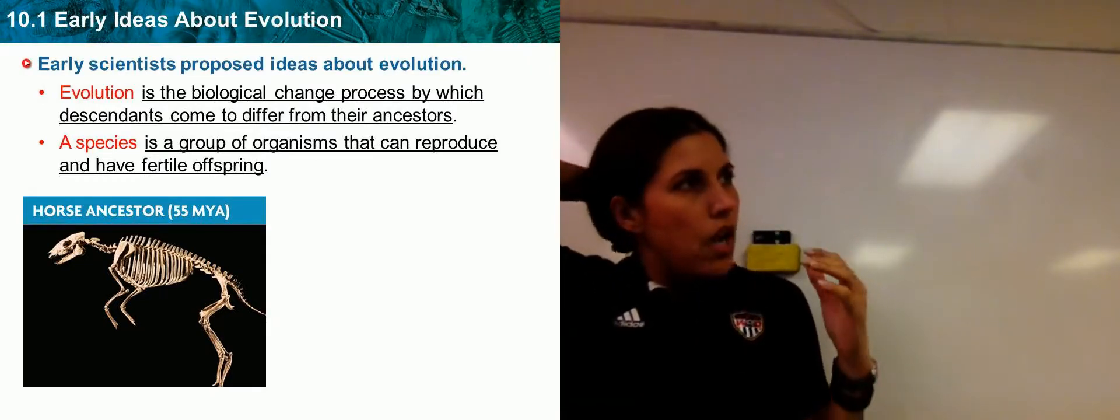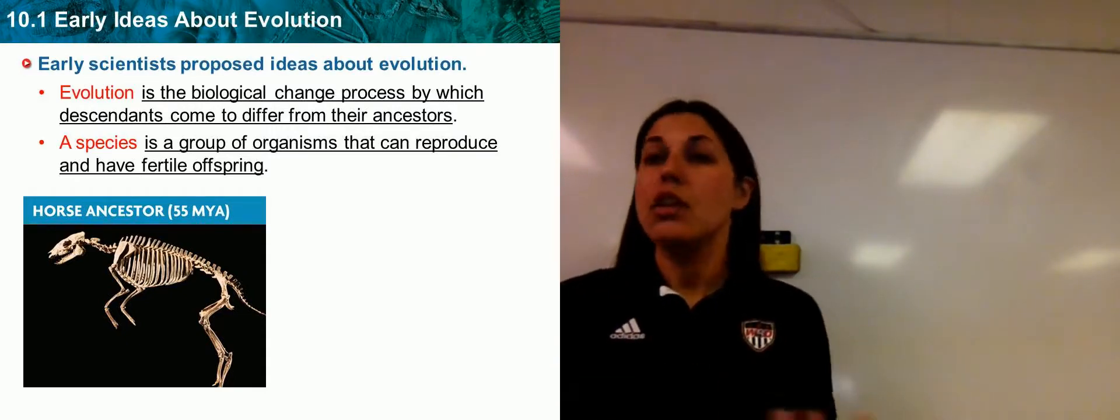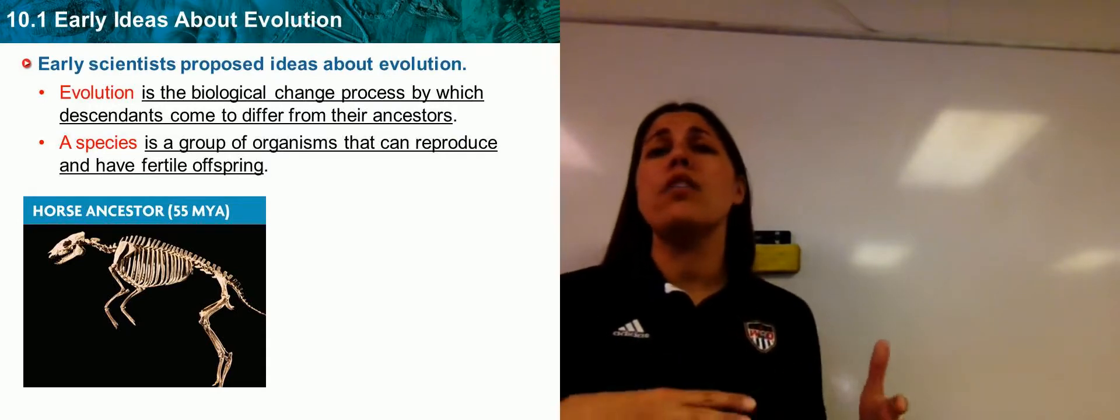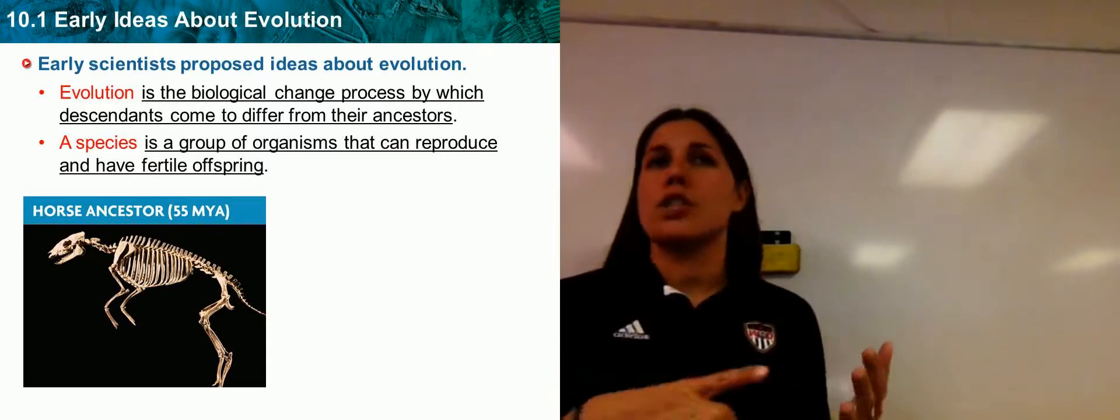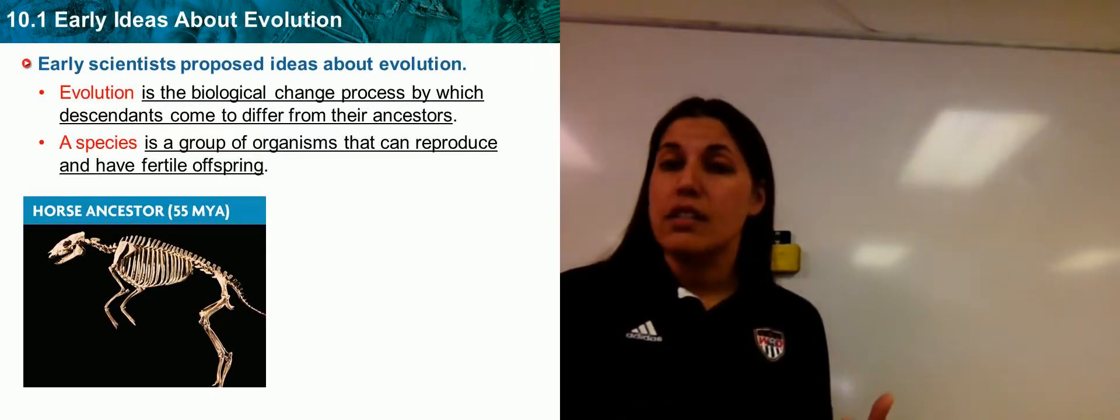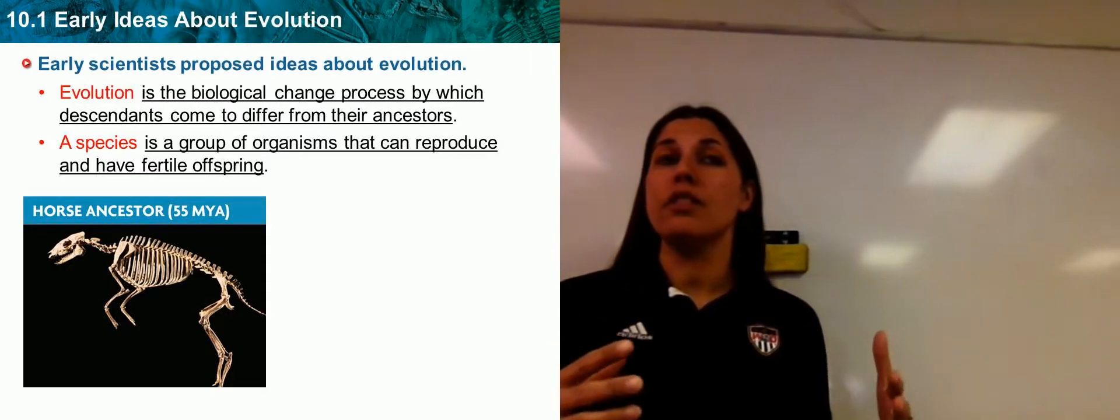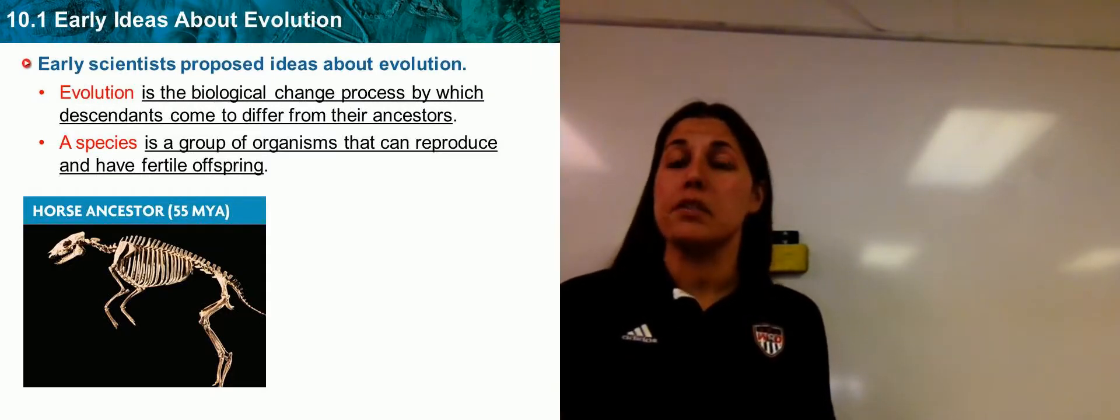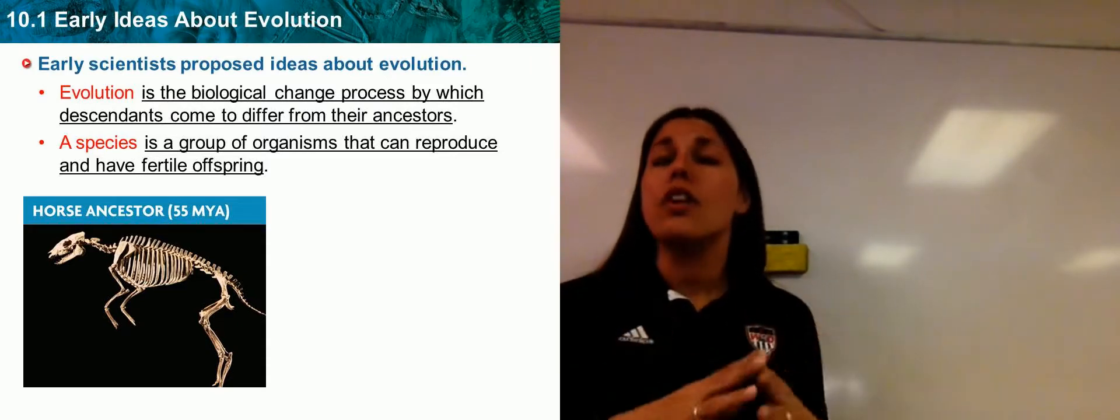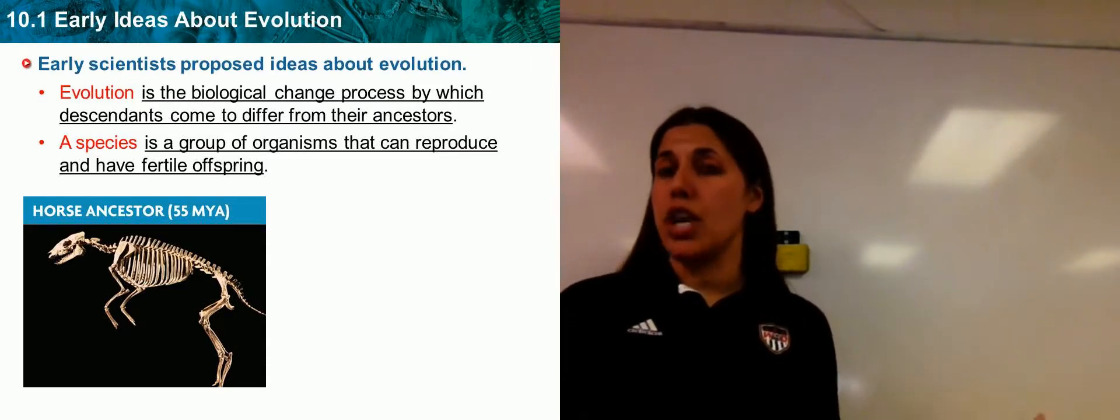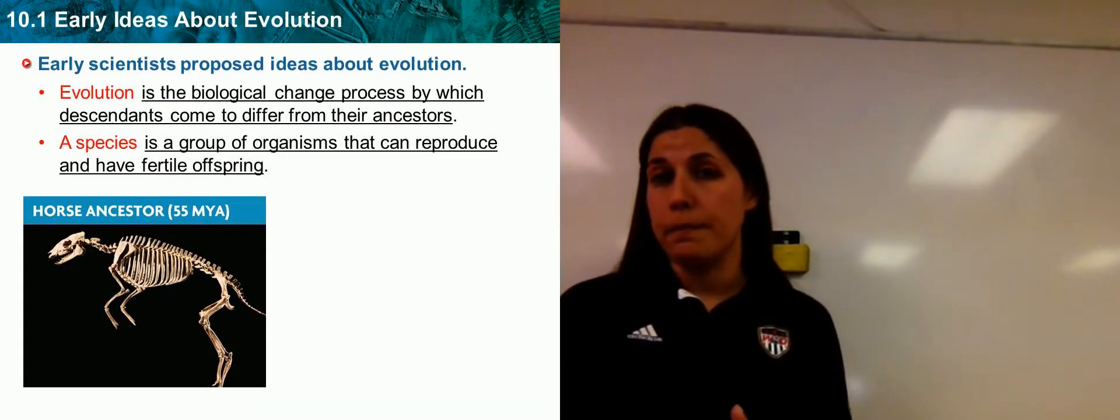Is every single species going to have the same time period for change? No, absolutely not. In the amount of time that you are watching this presentation, organisms such as bacteria, insects, maybe some types of plants, they will all evolve in probably 10 minutes. Other species, mammals, humans especially, they're going to take a long time to change. So every single species has a different set period for change over time.